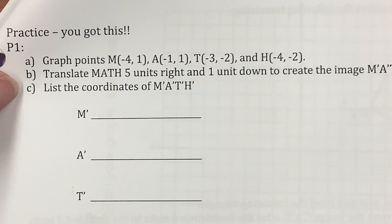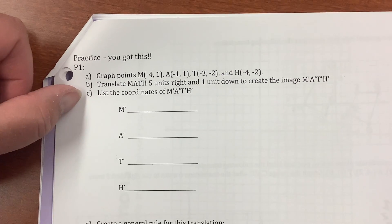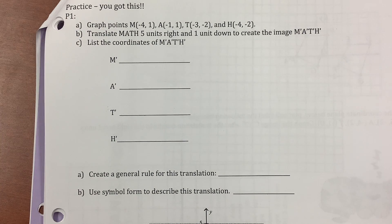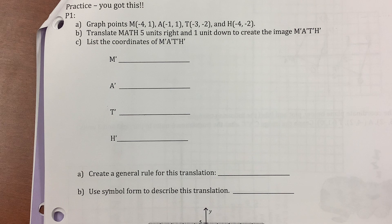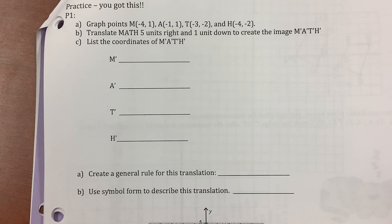Graph points M at negative 4, 1; A at negative 1, 1; T at negative 3, negative 2; and H at negative 4, negative 2. Yes, I am that teacher who spelled out MATH. Let's graph this. Negative 4, positive 1; negative 1, positive 1; negative 3, negative 2; and negative 4, negative 2. And I'm checking: negative 4, positive 1; negative 1 for A; negative 3, negative 2; and negative 4, negative 2.